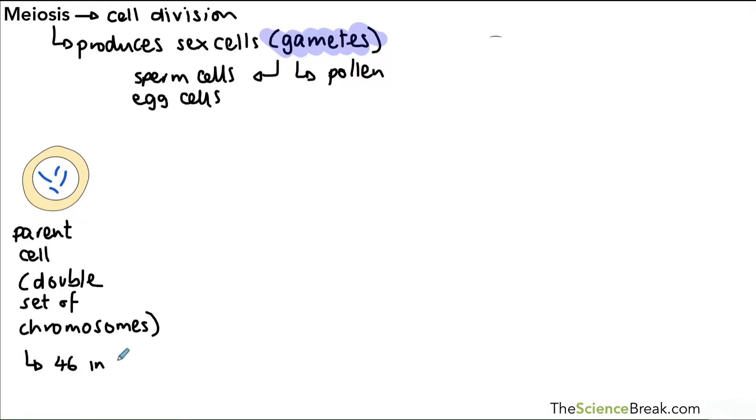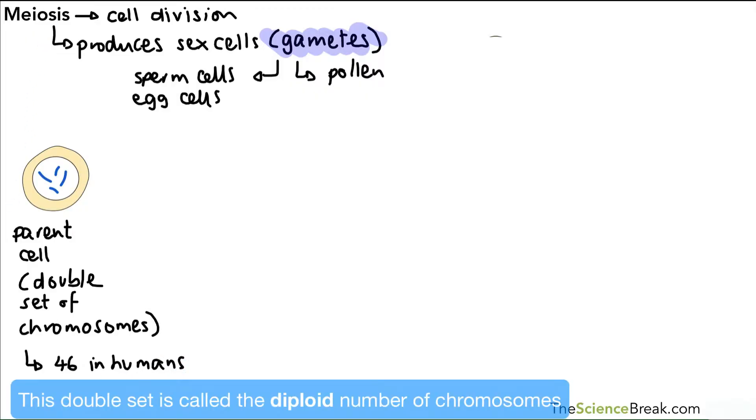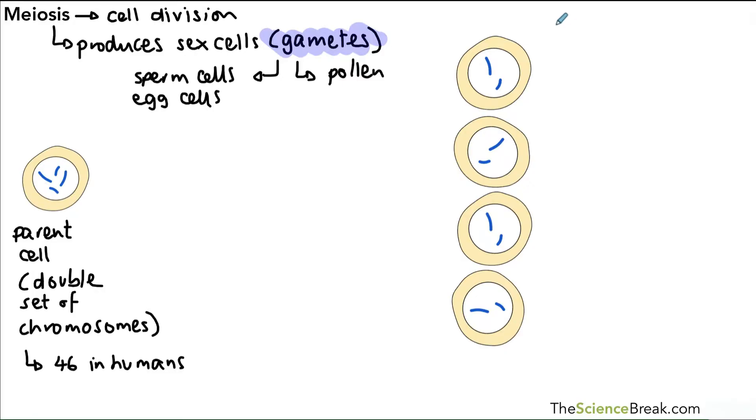There we have two long, two short, and we're going to call that a double set. In humans, the actual total number of chromosomes in the double set is 46. It varies for different living things, but for humans it's 46. When the process of meiosis is complete, we end up with four sex cells or four gametes.